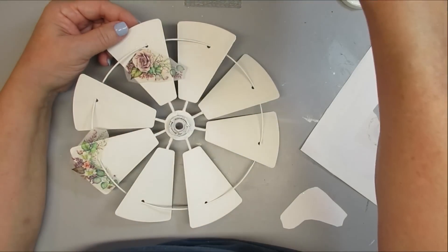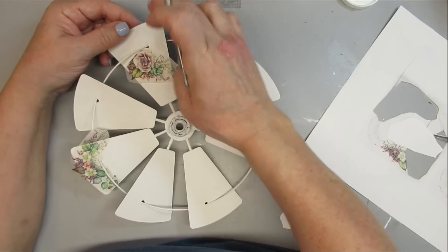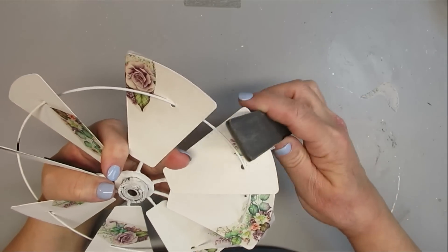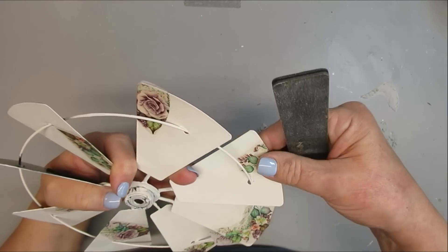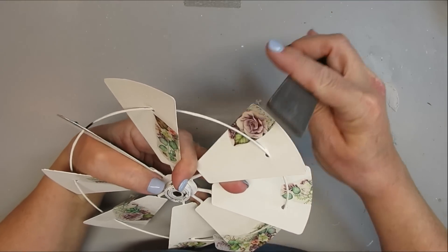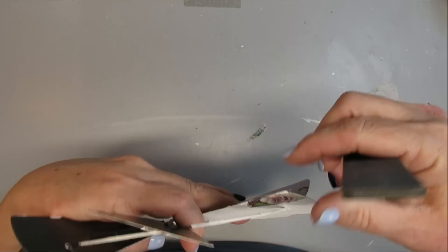I'm using Mod Podge to apply the tissue paper onto the blades and then just very gently putting some Mod Podge on top to make sure that it stays down. And then I'll just set it aside to dry. For all the little excess tissue paper that was hanging off the edges, I'm just taking an emery board and gently filing everything off.